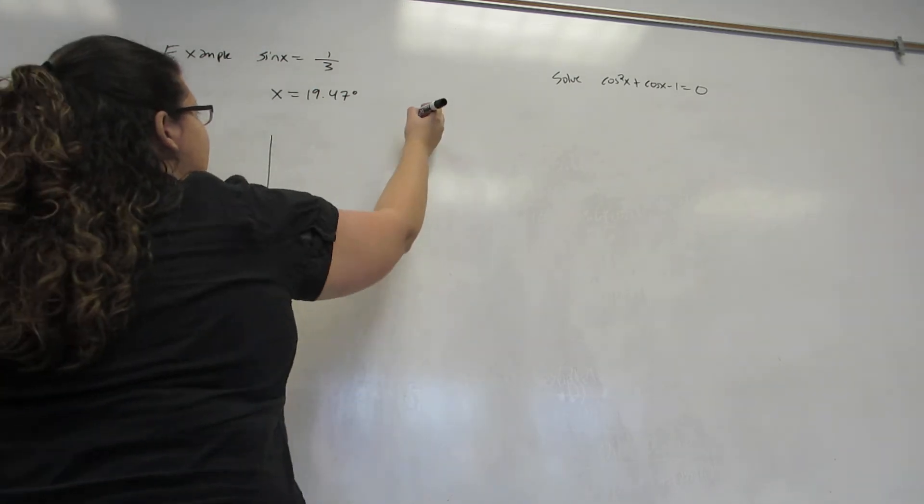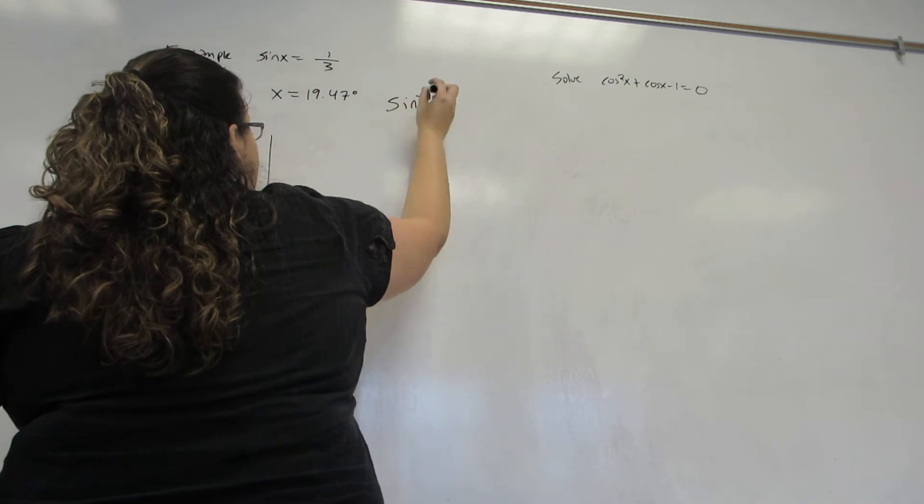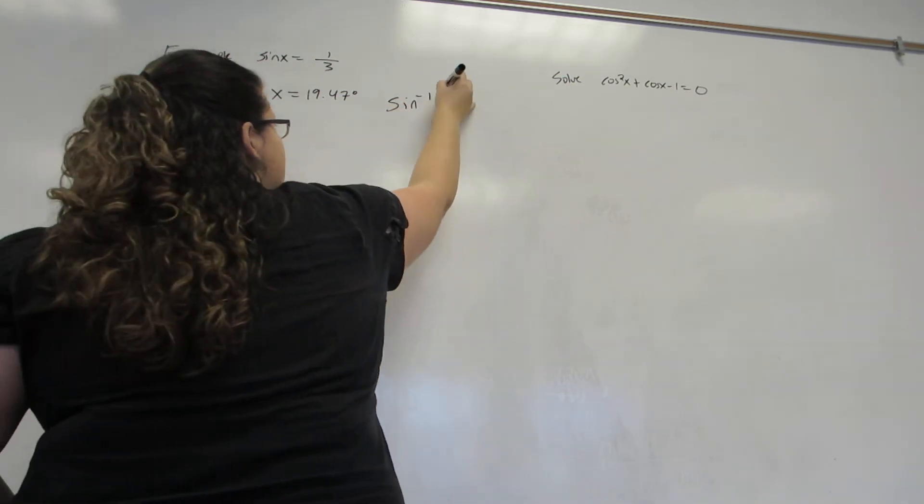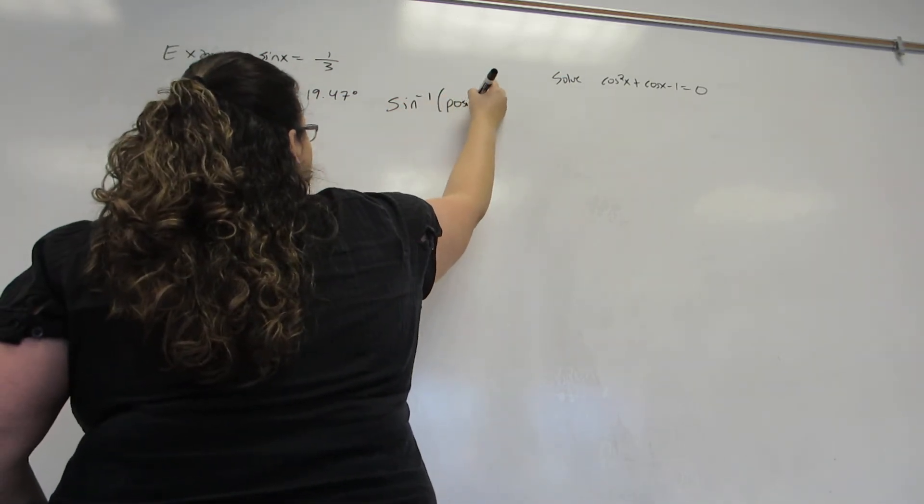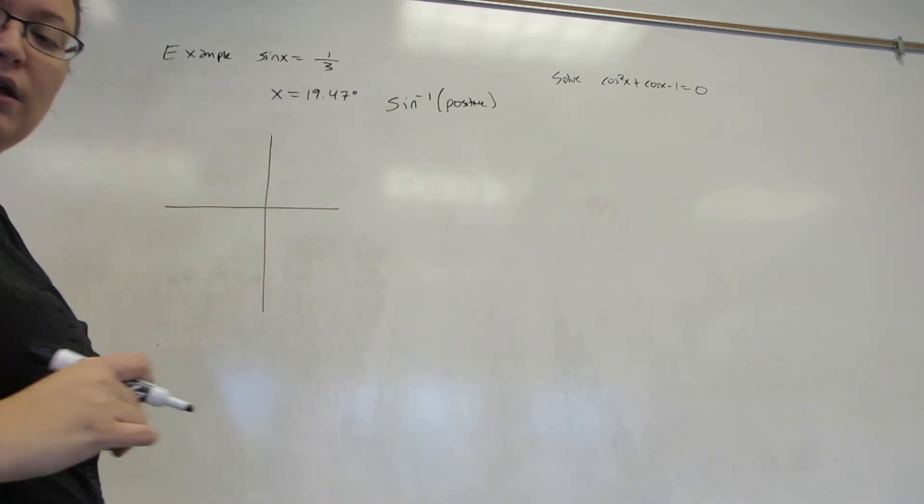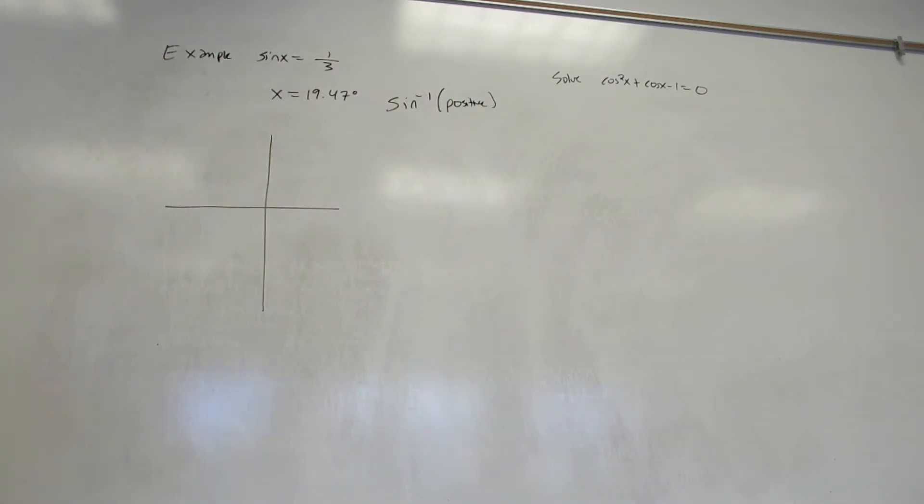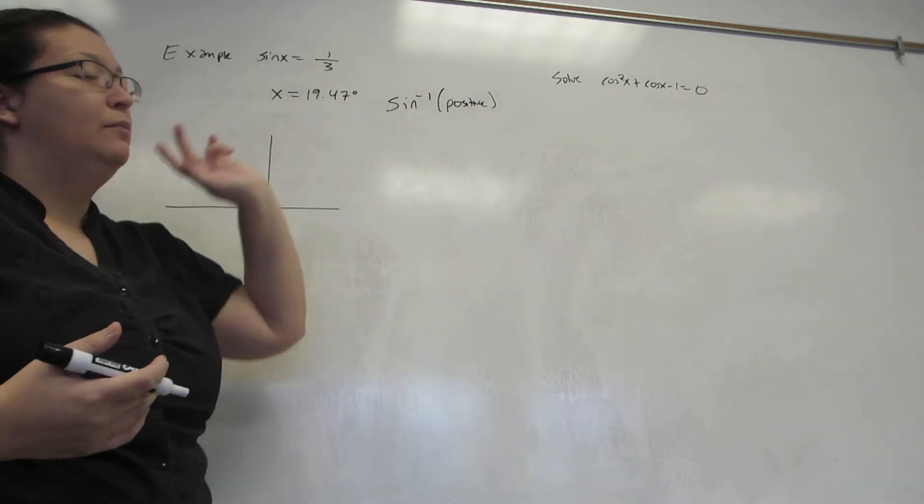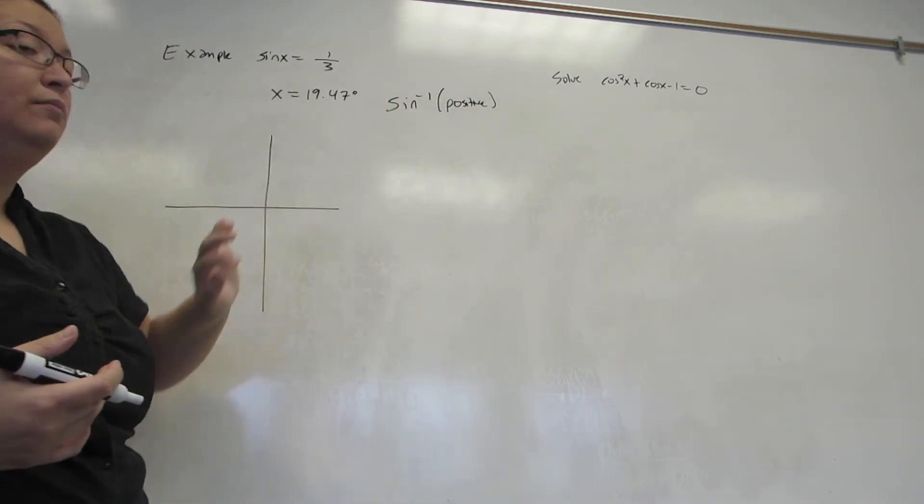I'm going to teach you a trick. First of all, in your calculator, you will always put sine inverse, or whatever the trig function is, of a positive number. So this one happened to be one-third, and we were okay with that. If it had been minus one-third, I still would have plugged in positive one-third to get the 19.47.